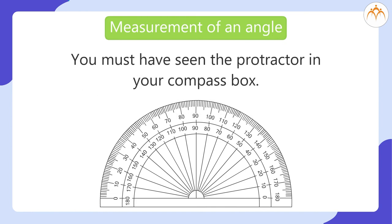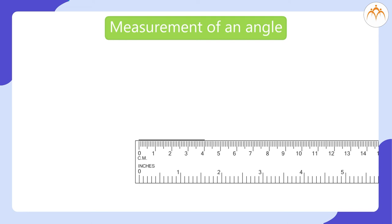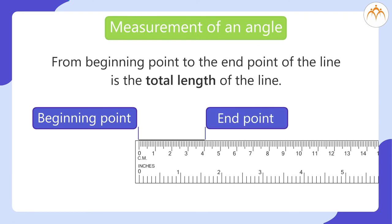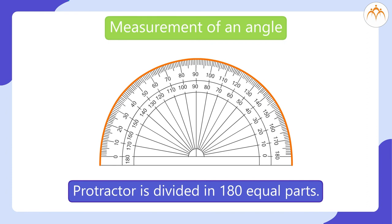You must have seen the protractor in your compass box. Do you remember how to measure a ray or a line? You place the zero mark of a ruler at the beginning point of a line. You match the ruler across the line. From beginning point to the end point of the line is the total length of the line. Let us know more about this friend. See the protractor carefully. It has a baseline from left to right. It has numbers from 0 to 180. The protractor is divided in 180 equal parts.